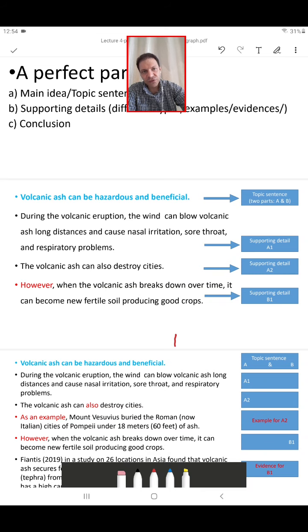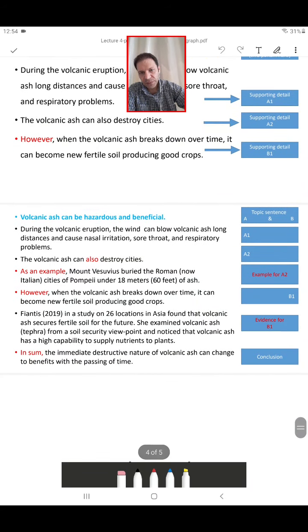And volcanic ash can destroy cities, so this is A2. One more time, we have hazards, and this sentence and this one are about the hazards. And also we have the benefits. This sentence is about the benefits, so this is B1. We have two supporting details for the hazards and one supporting detail for the benefits of volcanic ash.